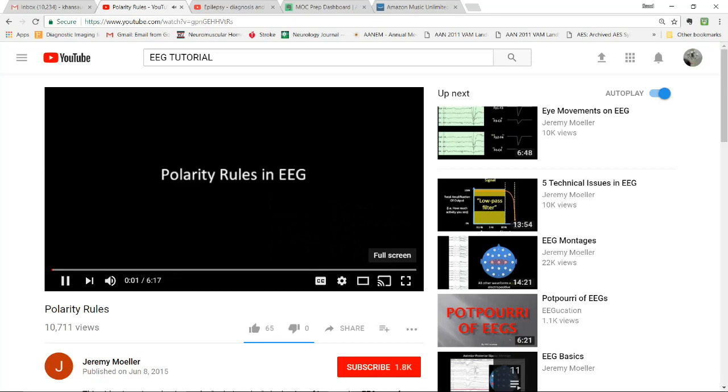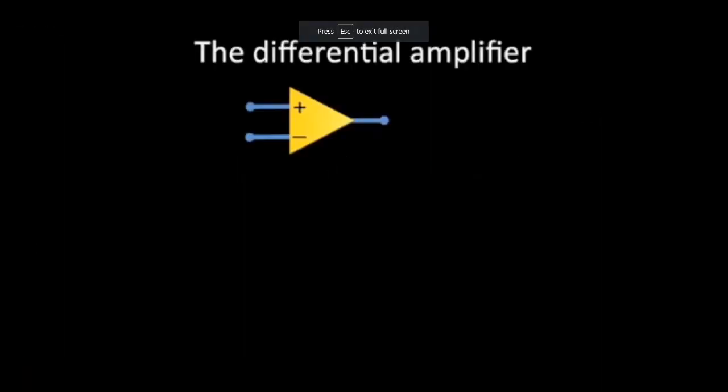In order to understand EEG well, it is important to understand polarity rules. The basis of EEG recording is a differential amplifier, which detects signals from two inputs, shown here as input 1 and input 2, and gives an output as the difference between these two signals.